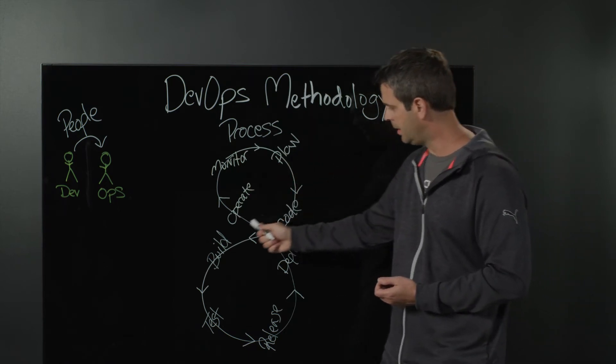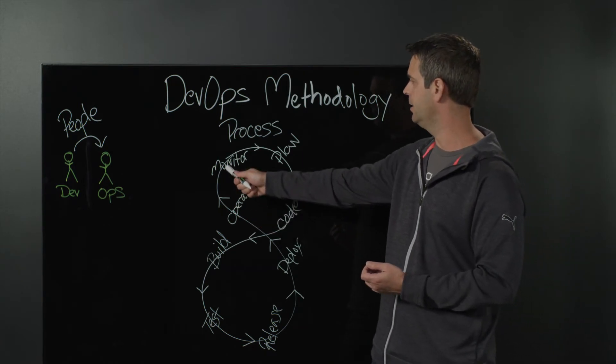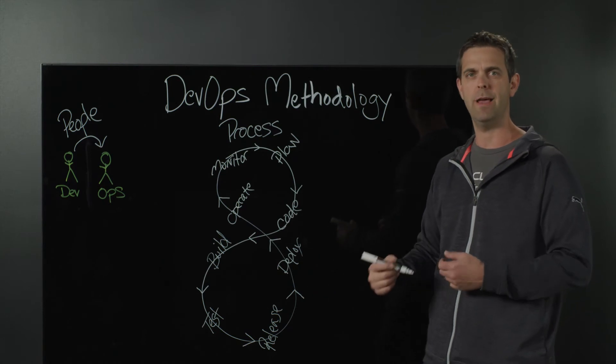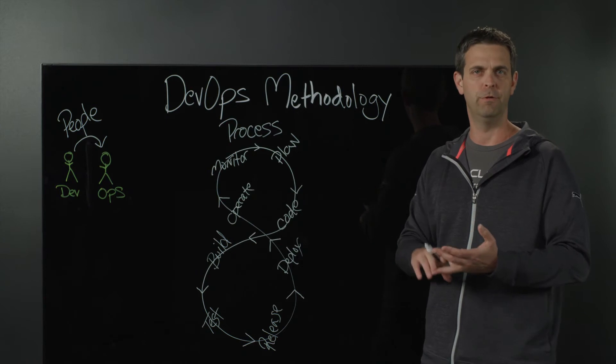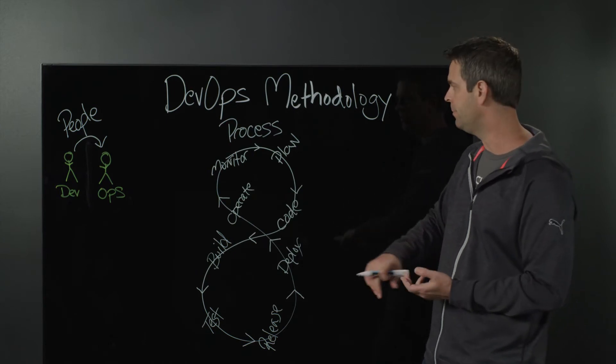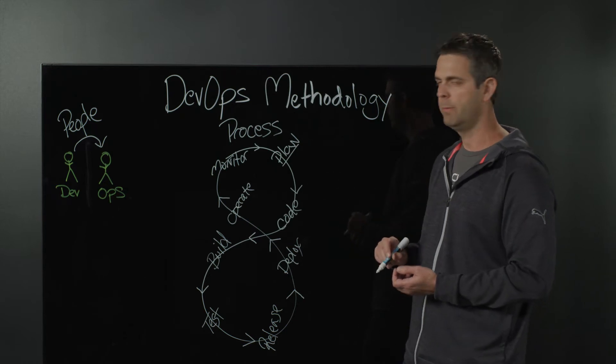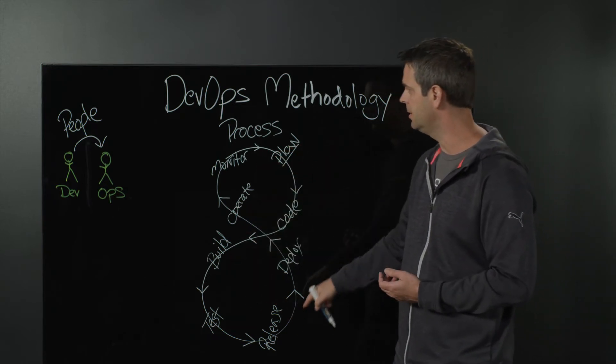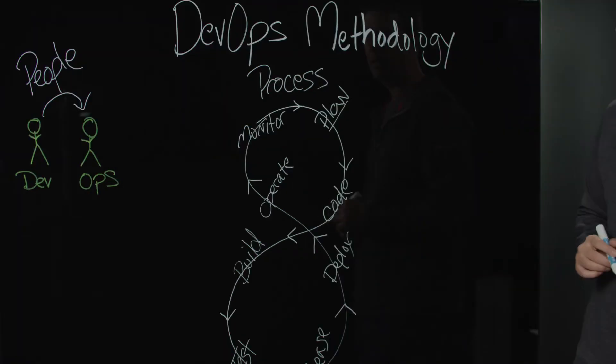As we go through this cycle of build, test, release, deploy, operate in production, continuously monitor throughout this process, we tend to identify additional opportunities to enhance our application, to improve performance, improve reliability. And all of that simply feeds back to the planning phase where we decide what to work on next. And then we build, and we move through this process again continuously until we have our final end goal achieved.